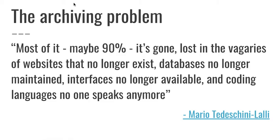One key problem to remember about interactivity is how the content is archived. Once you get into interactivity, this idea of separating content and interface means that quite often one of those two gets lost — the database disappears, or the interface is taken offline because a domain expires. There is a big problem in the industry around how we archive interactive storytelling, and there is a lot of work being done to try to ensure that interactive stories are not lost when the URL expires.